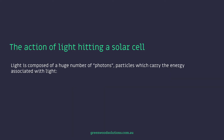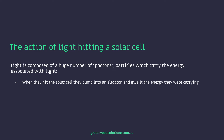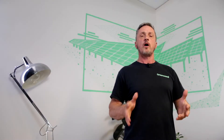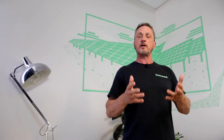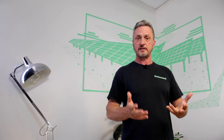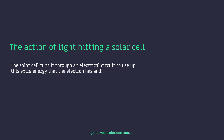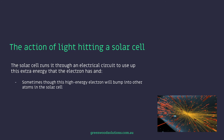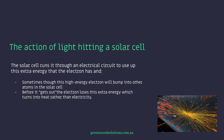Light is composed of a huge number of photons — particles which carry the energy associated with light. When they hit the solar cell they bump into an electron and give it the energy they were carrying. The electron goes from a low energy state to a high energy one. The solar cell is designed to extract the energy from this electron when it's in a high energy state, running it through an electrical circuit. Sometimes though this high energy electron will bump into other atoms in the solar cell, and before it gets out the electron loses this extra energy, which turns into heat rather than electricity.